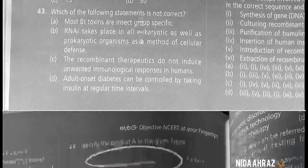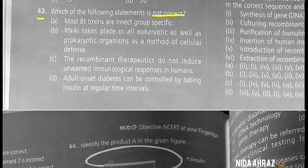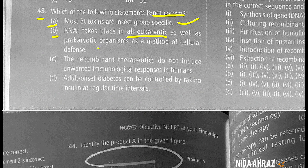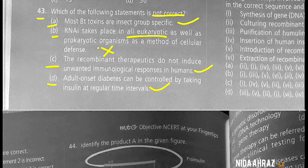Which statement is not correct? Most Bt toxins are insect group specific — correct. RNAi takes place in eukaryotic as well as all prokaryotic organisms as a method of cellular defense — incorrect. Recombinant therapeutics do not induce unwanted immunological responses in humans — correct. Adult onset diabetes can be controlled by taking insulin at regular intervals — correct. So option B is the incorrect statement and the correct choice.